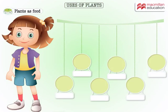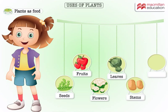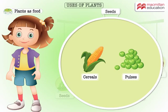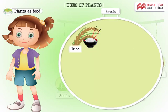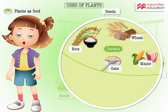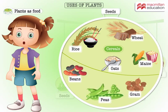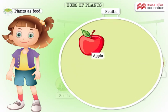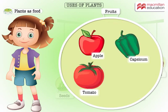We eat seeds, fruits, flowers, leaves, stems, and roots of different plants. Cereals and pulses are seeds. Rice, wheat, oats, and maize are cereals. Beans, peas, and gram are pulses. Apple, capsicum, tomato, and banana are fruits.